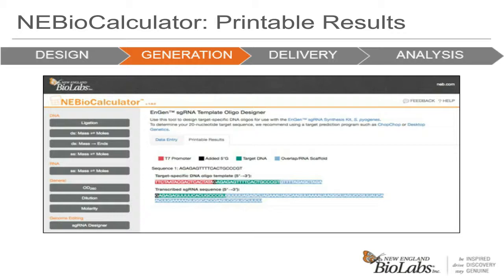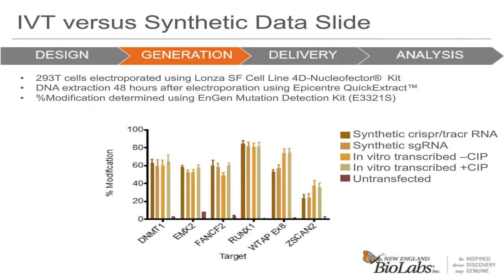Here is some data comparing chemically synthesized CRISPR tracer RNAs and sgRNAs to RNAs that are transcribed using the sgRNA kit with and without CIP treatment. These were RNP electroporations using the Lonza Nucleofector kit. We used the Epicentre Quick Extract solution to extract genomic DNA from cells 48 hours post-transfection. We chose several targets in 293 cells and measured the percent modification using our NGEN mutation detection kit, a T7 endonuclease-based assay. We see just as efficient editing with the in vitro transcribed RNA as with the chemically synthesized RNAs across all targets tested.